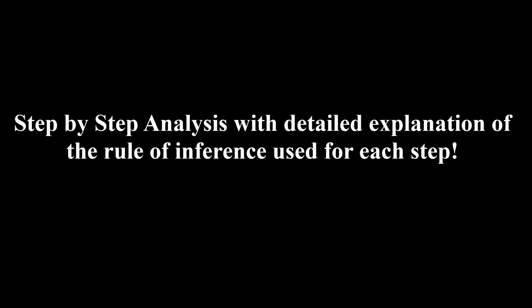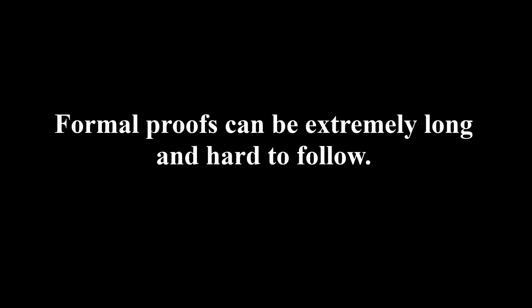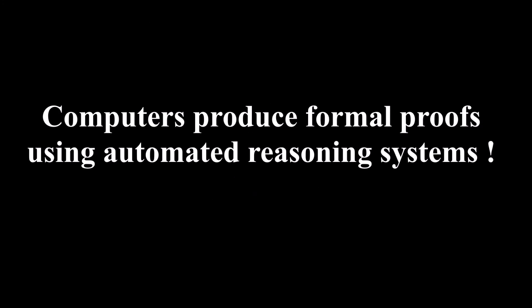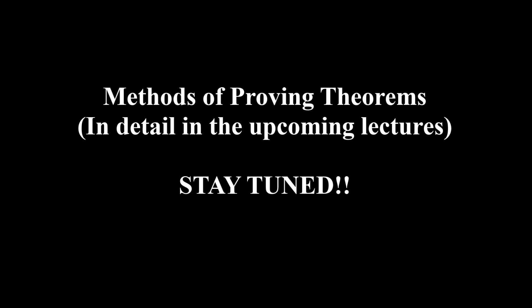The arguments we have seen to show that statements involving propositions and quantified statements are true were formal proofs, where all the steps were supplied and the rules for each step were given. However, formal proofs of useful theorems can be extremely long and hard to follow. In practice, proofs designed for human consumption are almost always informal proofs, where more than one rule of inference may be used in each step, steps may be skipped, and axioms and rules are not explicitly stated. Informal proofs can often explain to humans why theorems are true, while computers are perfectly happy producing formal proofs using automated reasoning systems. We will be looking at methods of proving theorems in detail in our next lecture.